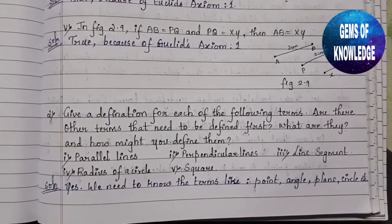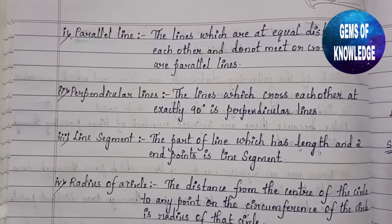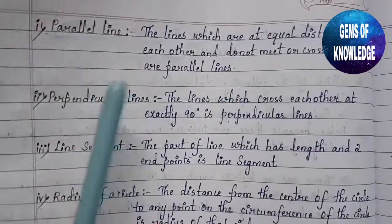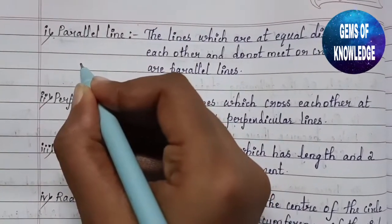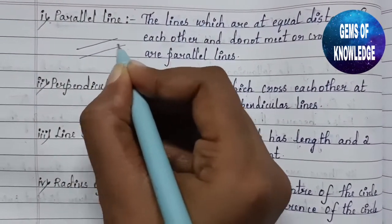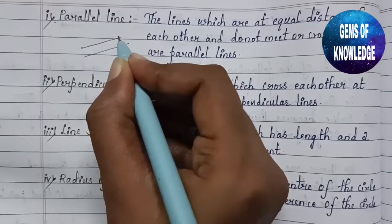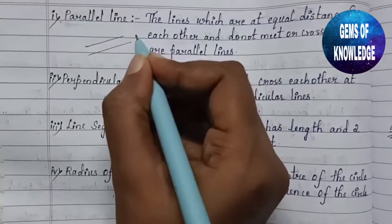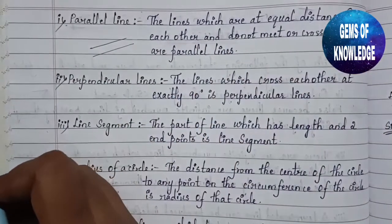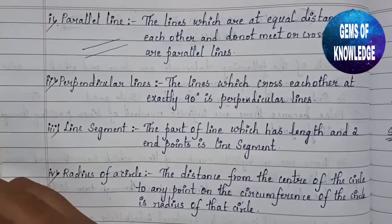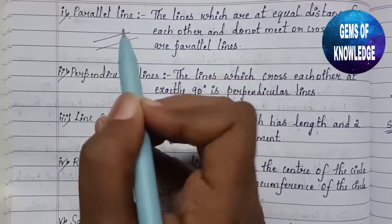Parallel lines are lines which are at equal distance from each other. The distance between them will be equal, and parallel lines do not meet or cross each other at any point. If two lines are at equal distance and do not meet each other at any point, they are called parallel lines.